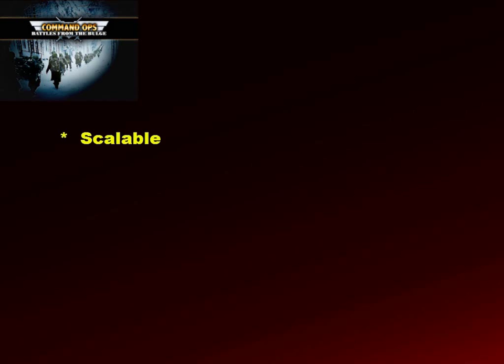A key requirement for the AI to be effective is that the command process has to be scalable from corps to company. This is effected by using a process that spirals down both in terms of the force structure and in terms of the planning doctrine.